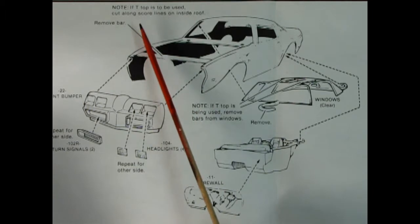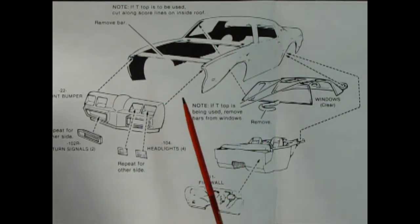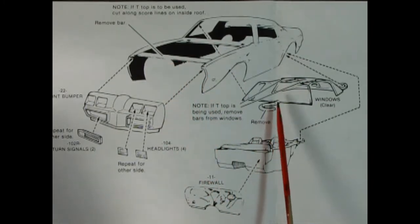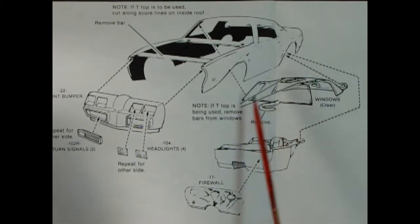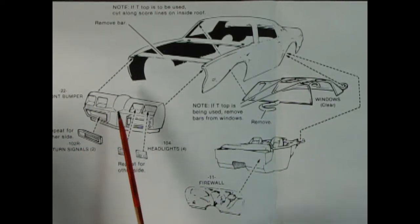Now step 12 shows the body going together. It says if T-top is to be used cut along score lines on inside of the roof, so here we'd remove this bar out of here, clip off this little coat hanger ring which is weird. If T-tops is being used remove bars from the windows. So there's our interior going up underneath in our firewall, then we've got our front bumper and there's all these little bits that go inside there, the front headlights, there's four of those, and the turn signals for the bottom.